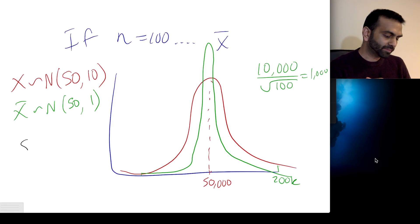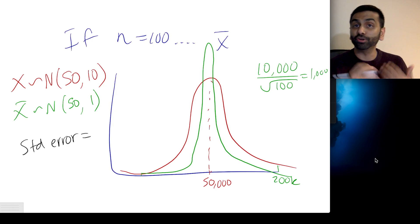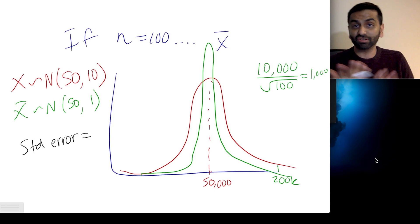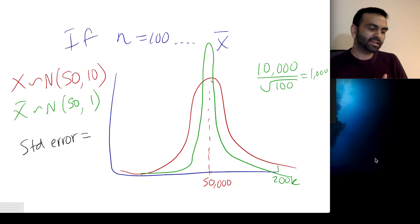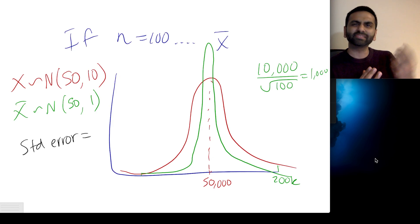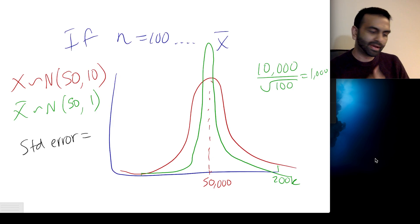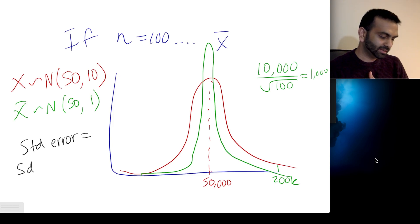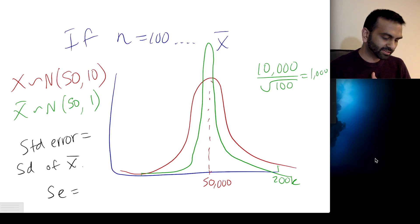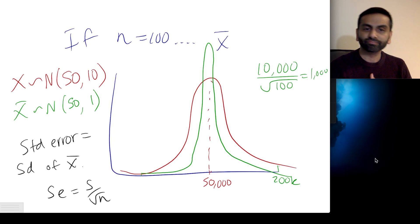Standard error is literally the standard deviation of x-bar — not of x. The standard deviation of x is just standard deviation, but the standard deviation of x-bar, describing how possible sample averages are distributed, that's your standard error. As a formula, standard error (SE) is literally s over root n.